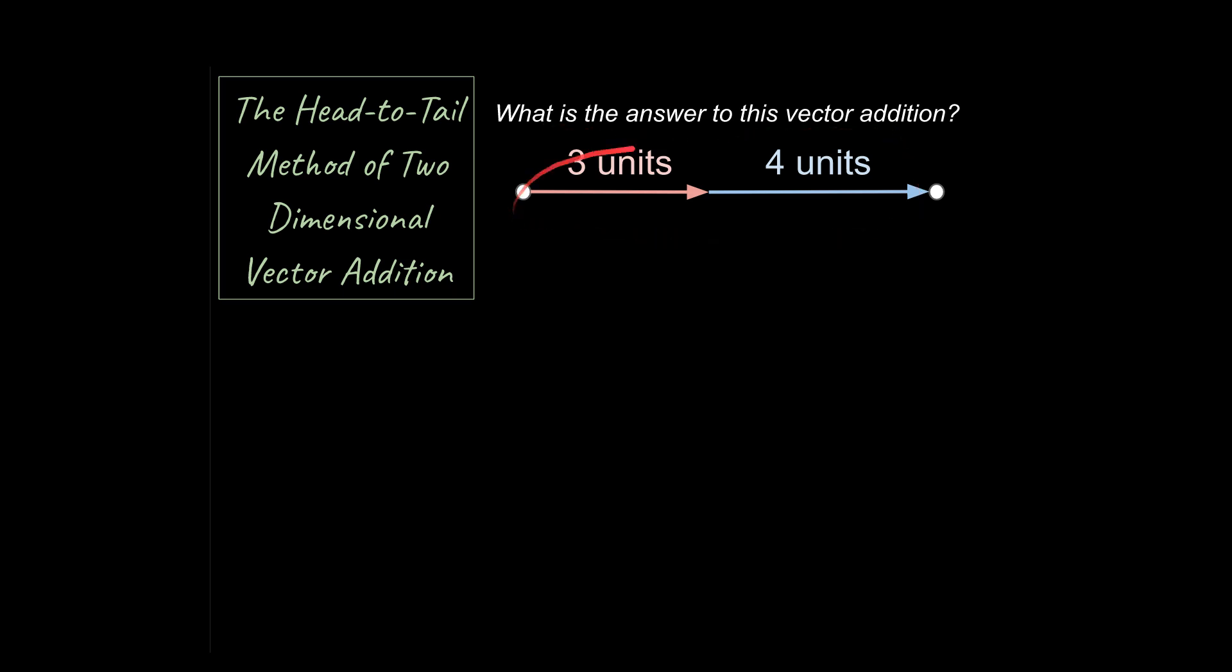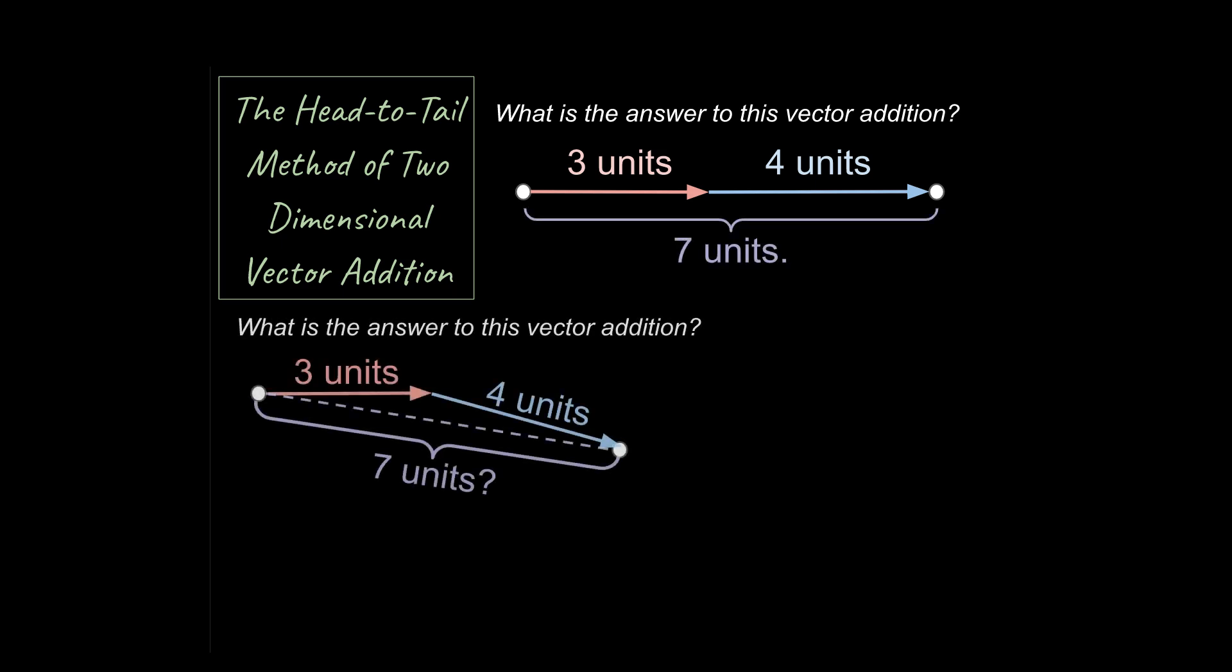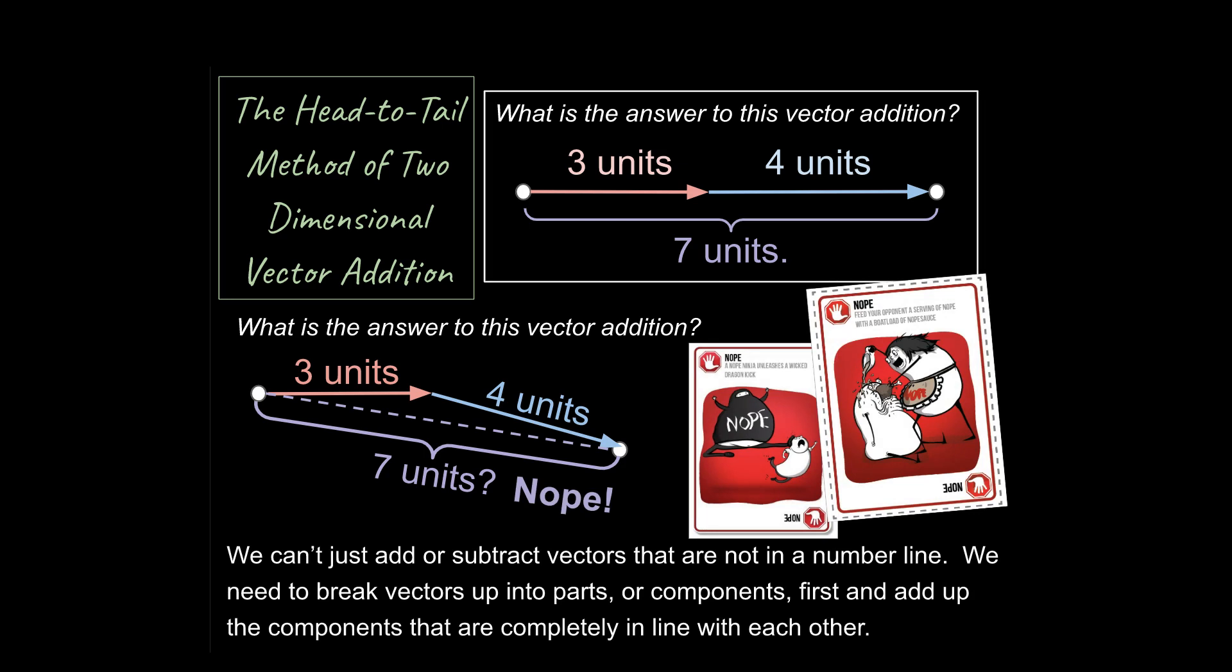What is the answer to this vector addition? So if you add three units plus four units and these two vectors are in a line, what do you expect the answer is going to be? It's going to be seven and that would be correct. How about this? How about a follow-up question? And what would be the answer to this question? If we have three units and we add another four units but they are not in a line, is this going to be seven units? And the answer is no. Hopefully you get the idea that the answer is not going to be seven units.